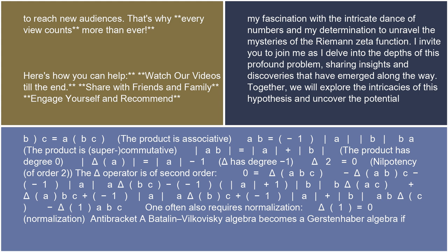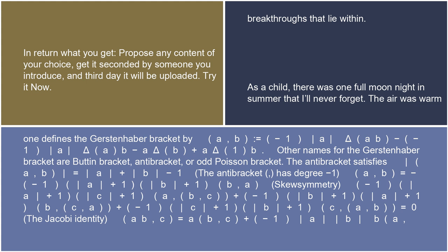A Batalin-Vilkovisky algebra becomes a Gerstenhaber algebra if one defines the Gerstenhaber bracket by (A, B) = (−1)^|A| delta(AB) − (−1)^|A| delta(A)·B − A·delta(B) + A·delta(1)·B. Other names for the Gerstenhaber bracket are Buttin bracket, antibracket, or odd Poisson bracket. The antibracket satisfies |{A,B}| = |A| + |B| − 1 — the antibracket comma has degree minus 1.